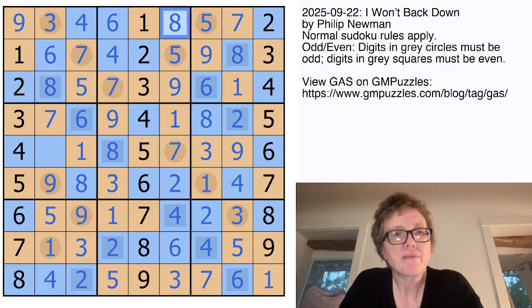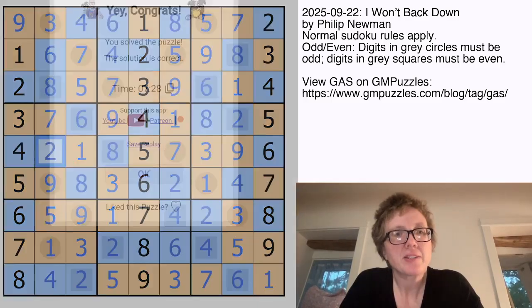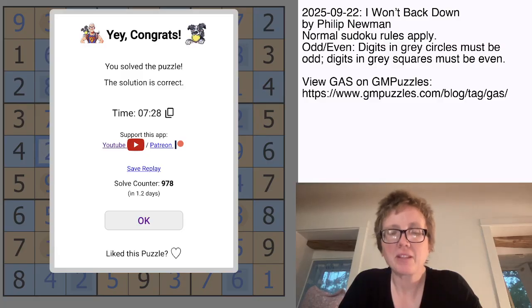And I believe we can just finish off with classic Sudoku. There you go. And that is how you solve Philip Newman's I Won't Back Down. Hope you guys enjoyed that one. If you want to solve it yourself, the link is in the description of this video. And I will see you again in a few days.